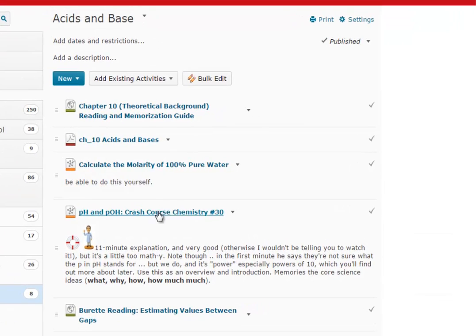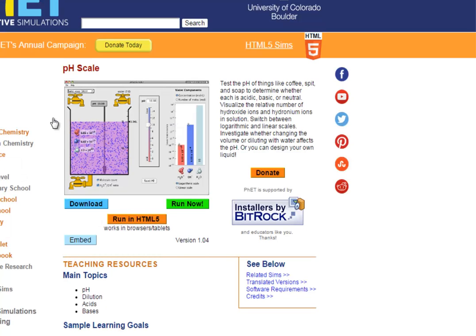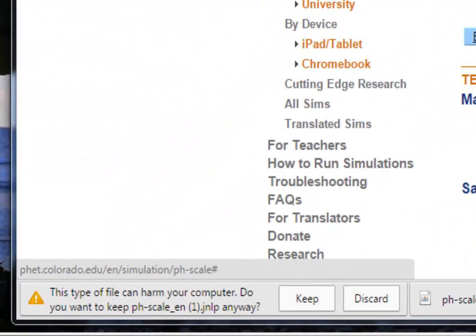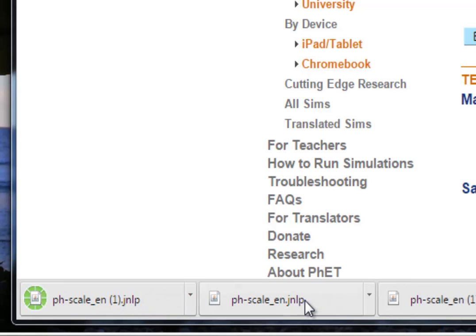Here's a quick demo to show you how to use the PhET program. We're going to locate PhET down here under acids and bases. This loads us into the University of Colorado and we're going to choose Run. That's going to download a JavaScript onto our hard drive and we're going to keep that and then we're going to open that up or run that file.